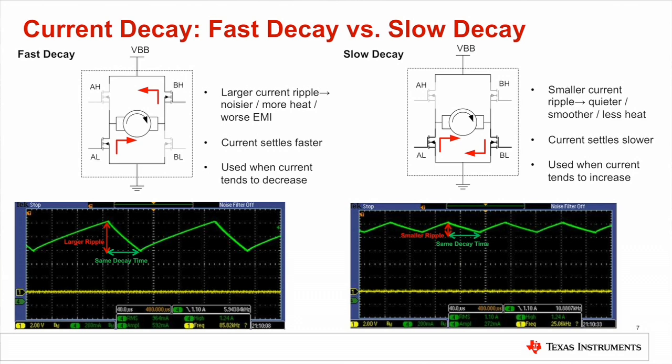On the other hand, if you spin your motor very fast and it quickly transits from one micro step to another, fast decay can help you quickly settle down motor current. In general, slow decay is used when the motor current tends to increase, to keep the minimum current ripple. Fast decay is used when current tends to quickly decrease, so you can settle the current before moving to the next micro step.